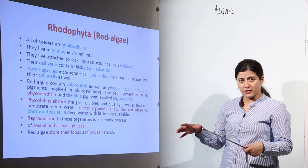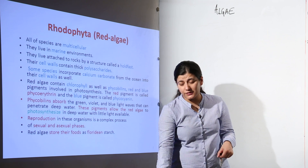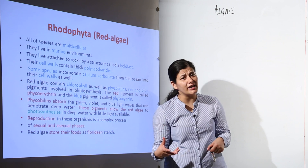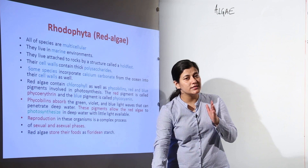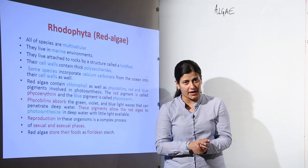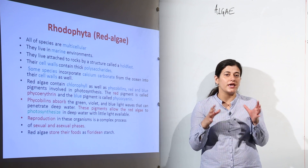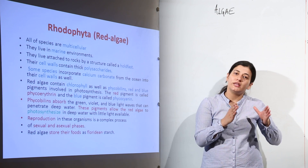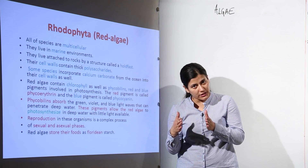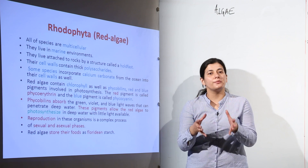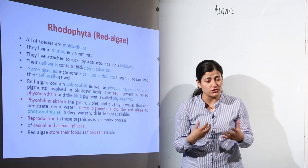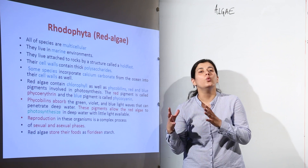Talking about reproduction: in earlier cases we discussed flagellated zoospores and flagellated gametes. For red algae, vegetative propagation occurs by fragmentation. Asexual reproduction takes place with the help of non-flagellated spores. In the case of sexual reproduction, it is carried out by the formation of gametes in an oogamous manner.